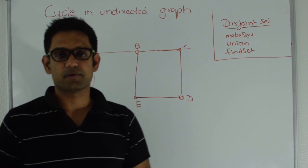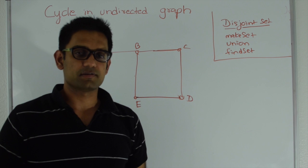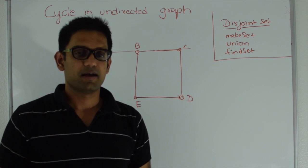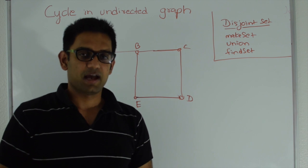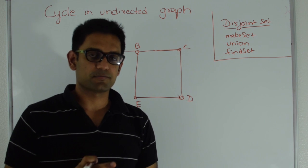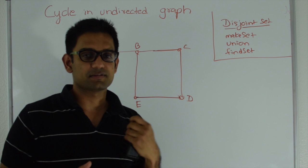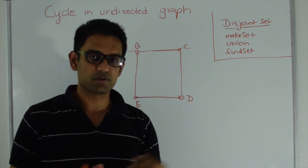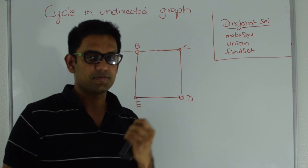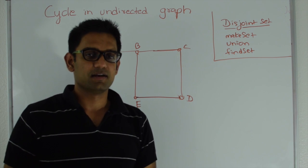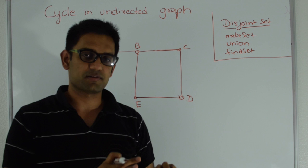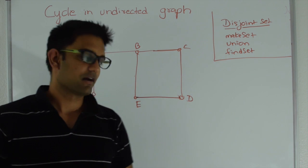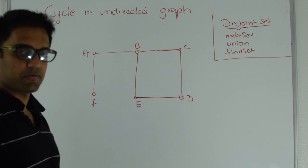The idea is very simple. All you have to do is create as many sets as the number of vertices you have, and then pick an edge and check whether both vertices of this edge are in the same set or in different sets. If they're in a different set, you union those two sets together. If they're in the same set, it means there is another edge which already connected them, so this edge must be creating a cycle in the graph. Let's work with this example.